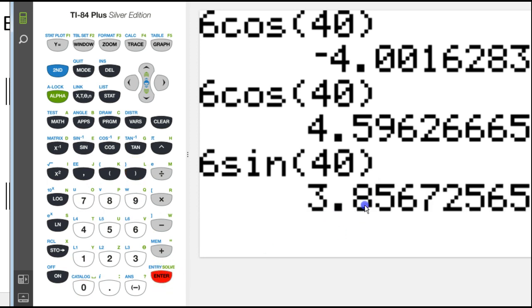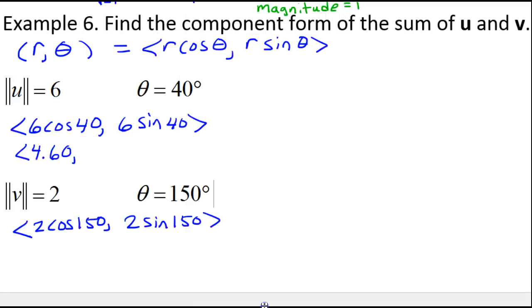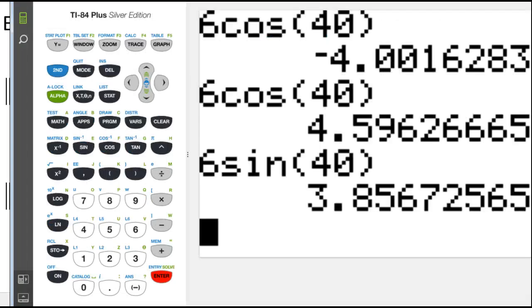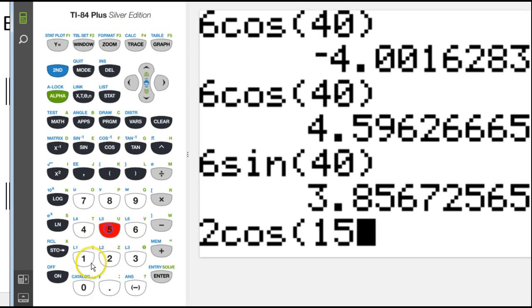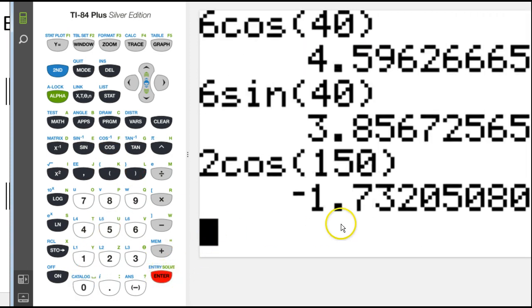All right, what about 2 cos 150°? That's -1.73.